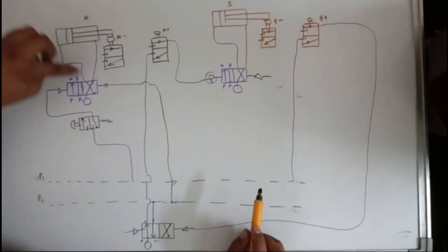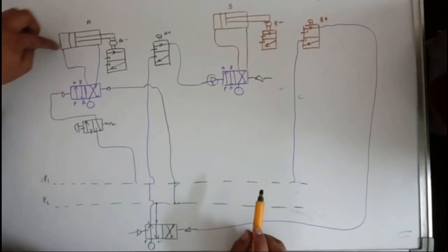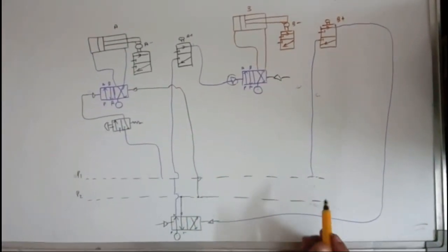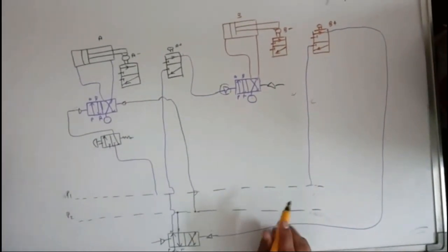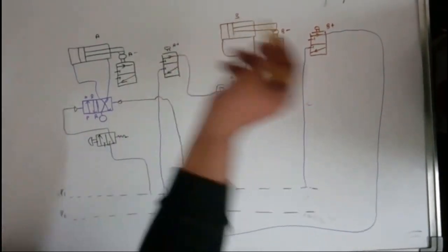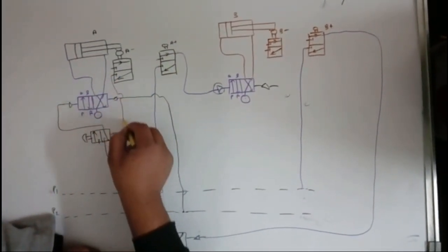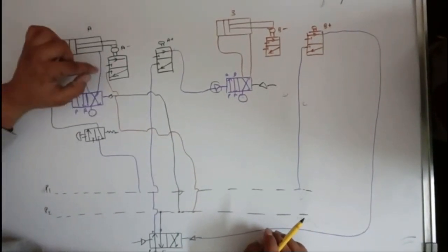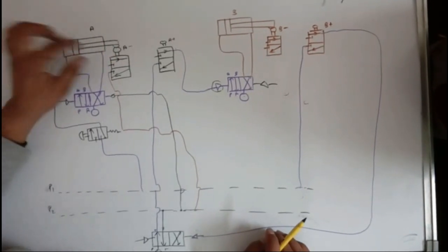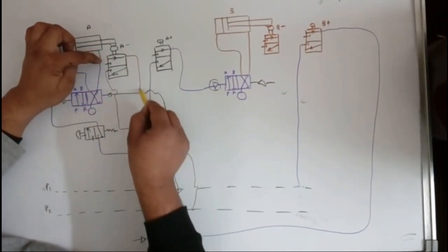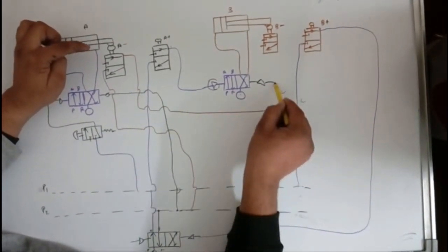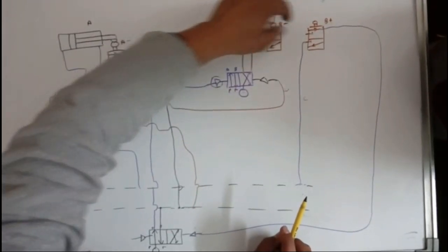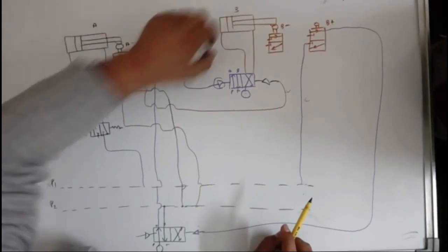Air starts entering from one side and leaving from the other, causing cylinder A to retract. When the piston reaches A−, the limit switch is pressed again. This changes the valve position and pressure from P2 flows through, operating the pilot for cylinder B's valve, changing it so B retracts — achieving B−.